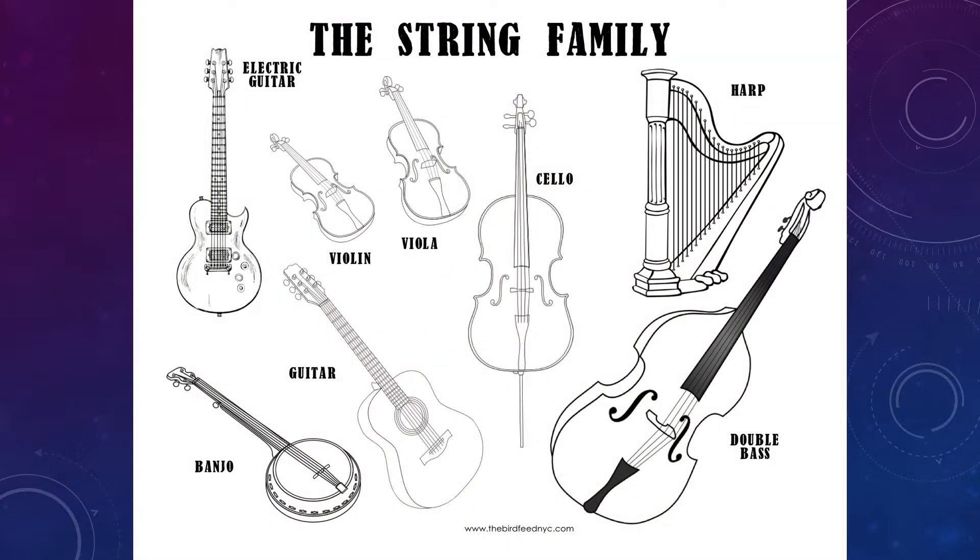Members of the string family include violins, violas, cellos, bass, guitars, ukuleles, banjos, mandolins, and lutes. The harp and the piano are also members of the string family, but they have sound boards as filters rather than the body of the instrument. They have other characteristics that make them members of other instrument families as well.